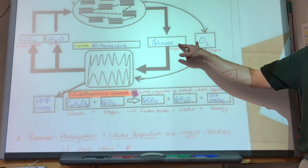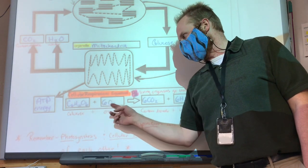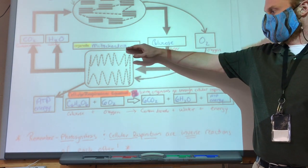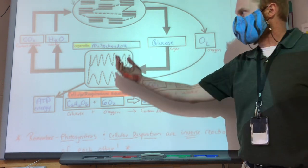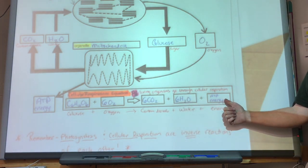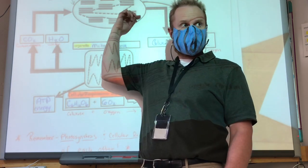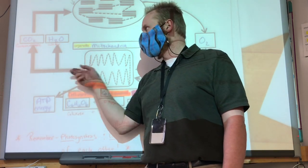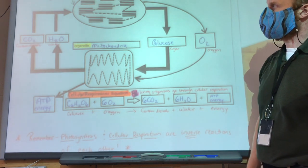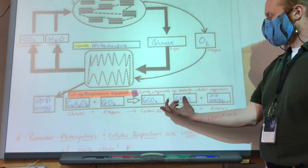Glucose and oxygen are the reactants of cellular respiration, which occurs in the mitochondria. What comes out? Carbon dioxide, water, and chemical energy in the form of ATP. ATP doesn't cycle back up — it comes out as usable chemical energy. Carbon dioxide and water feed back into the chloroplast and get recycled.